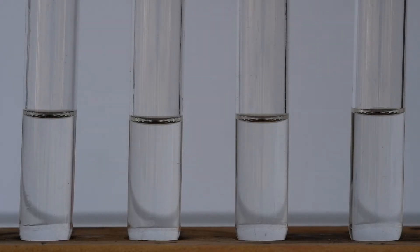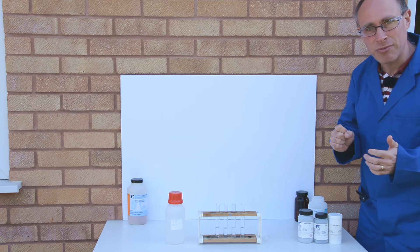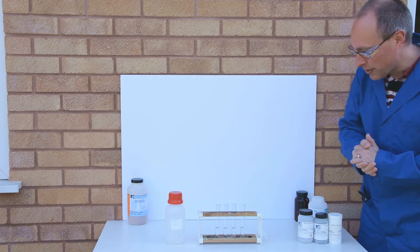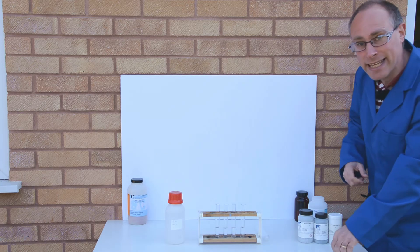So we've got four test tubes, each of them have a small amount of dilute hydrochloric acid, and into each of these test tubes I'm going to place a small amount of a metal and we'll look for any evidence of a chemical reaction.